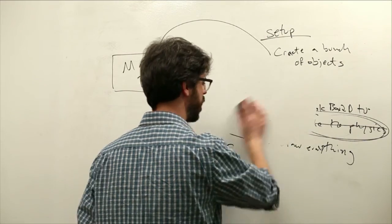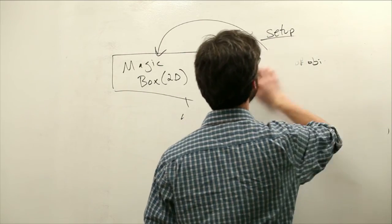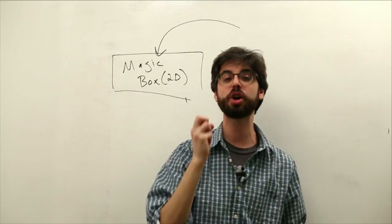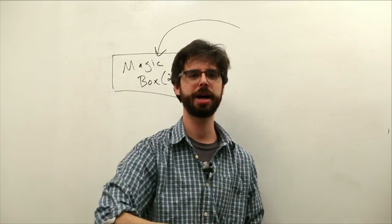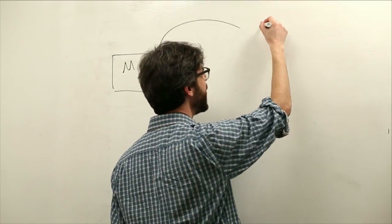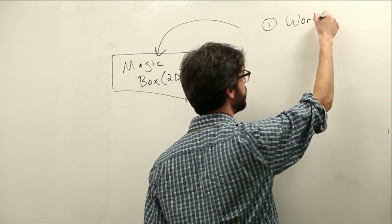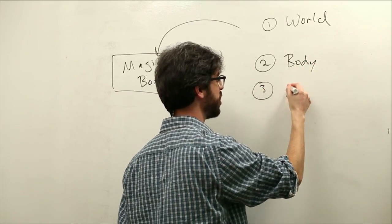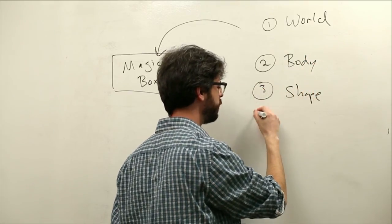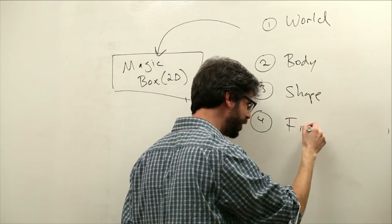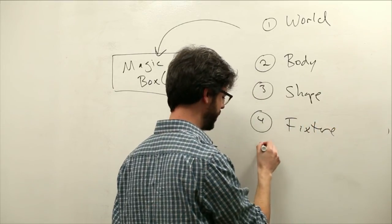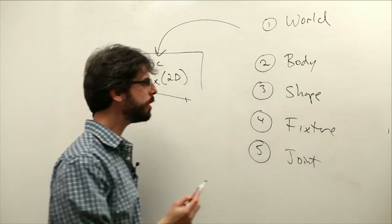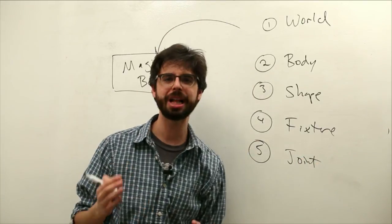So let's erase all this over here, and let's talk about what are the central elements of Box2D. What are the things we're going to have to learn about to use Box2D? So Box2D has a bunch of elements. Number one, there's something called a world. Number two, there's something called a body. Number three, there's something called a shape. Number four, there's something called a fixture. And number five, there's something called a joint.